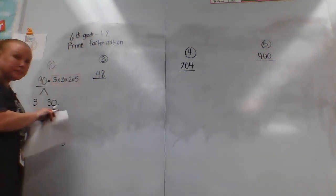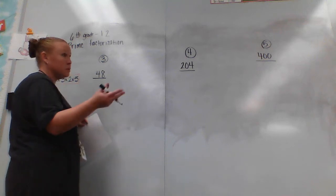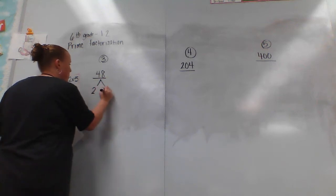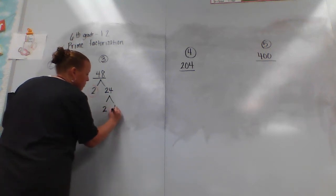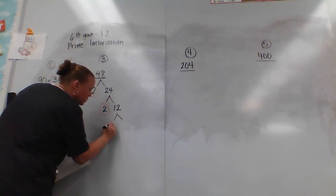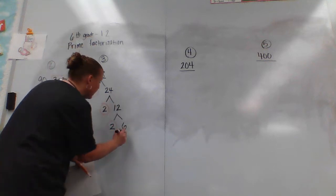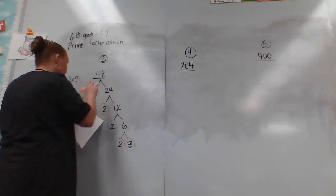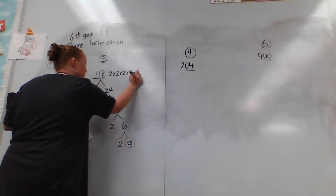We're going to go on to 48. We could do 24 times 2, 6 times 8, any number of things. I'm going to do 2 times 24 because that gets me a prime number faster. Circle that 2. For 24, I'll do 2 times 12 — gets me a prime number. 12 I can do 2 times 6, which gives me a prime number. 6 is 2 times 3, both prime. So up here we write 2 times 2 times 2 times 2 times 3 — that's our whole answer.